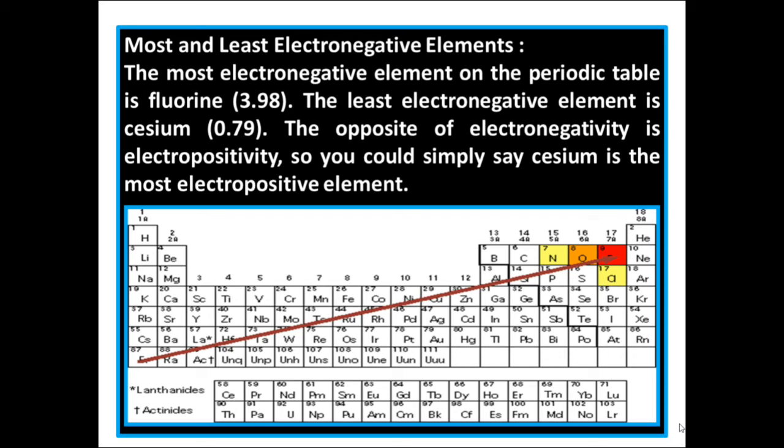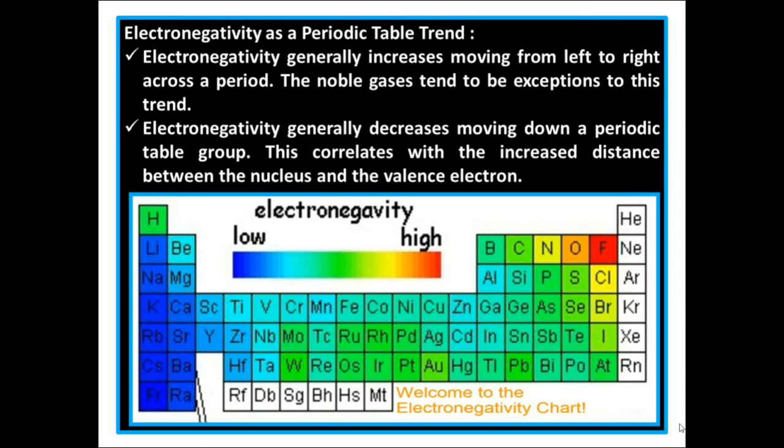You could simply say caesium is the most electropositive element. Electronegativity as a periodic table trend: Electronegativity generally increases moving from left to right across a period. The noble gases tend to be exceptions to this trend. Electronegativity generally decreases moving down a periodic table group. This correlates with the increased distance between the nucleus and the valence electron. Observe the diagram. Red color showing higher electronegativity atoms and blue color showing lower electronegative atoms.